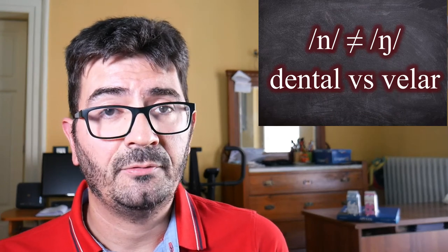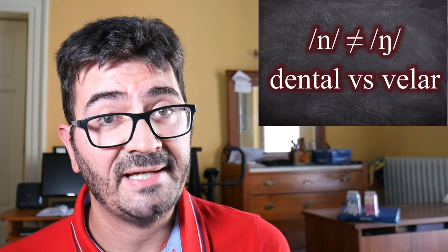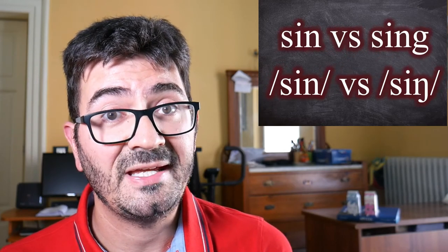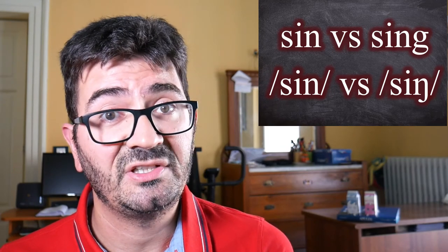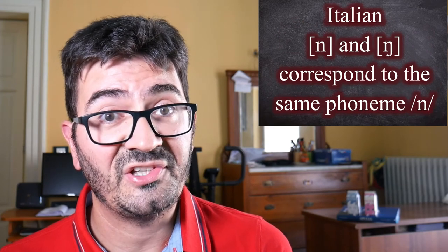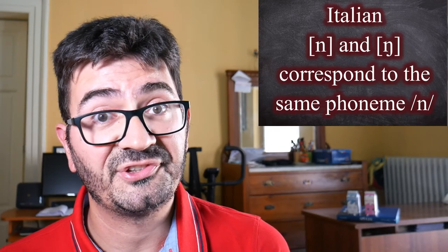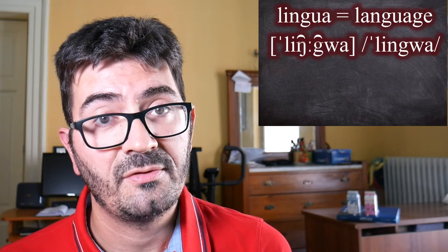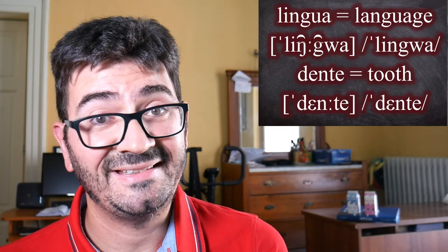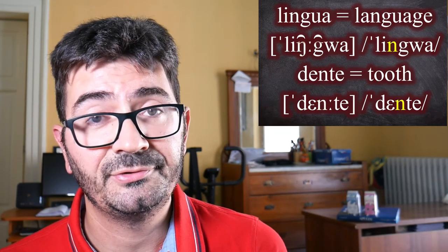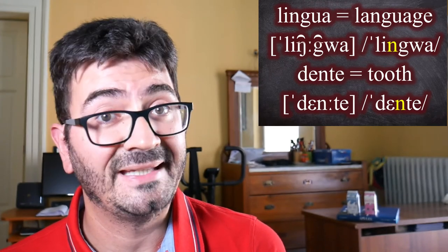That glottal sound is a phone - it exists and you can hear it if you pay attention - but it's not a phoneme in English. For another example: in English you have the sound N (dental) and NG (velar) as two different phonemes - you can say 'sin' and 'sing,' which are different words. But in Italian, N and NG do exist as two different phones, yet the velar NG is just an allophone of N when a velar sound follows. So in 'lingua' you get the velar sound, and in 'dente' you get the dental sound - two different phones but not two different phonemes.